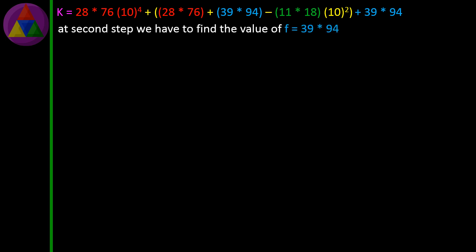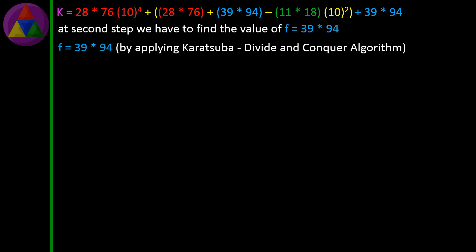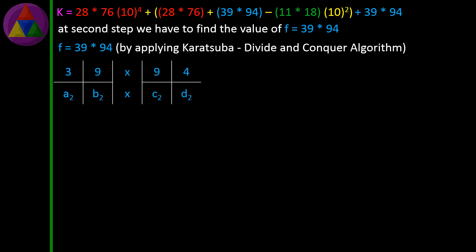At the second step we have to find the value of F, which is equal to 39 × 94. F = 39 × 94, by applying the Karatsuba divide and conquer algorithm. 39 × 94 is divided into 4 individual cells and labeled as A2, B2 and C2, D2.